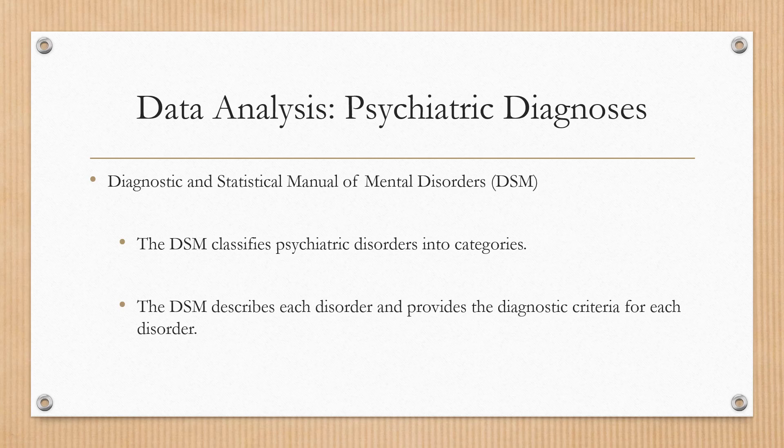Diagnoses of psychiatric illnesses are found in the DSM. DSM-5 categorizes mental disorders into categories. It describes each disorder and gives diagnostic criteria to distinguish one illness from another.